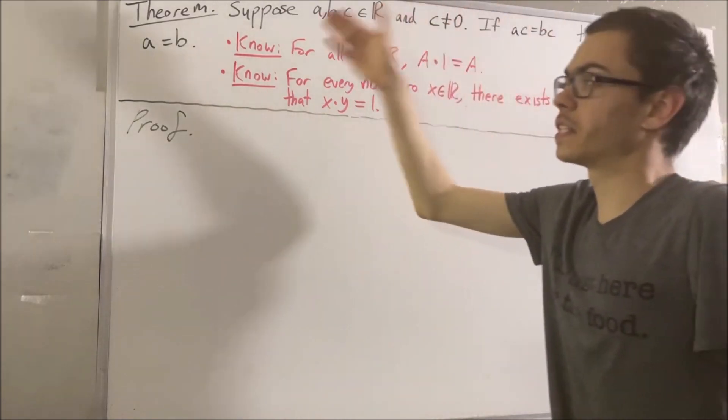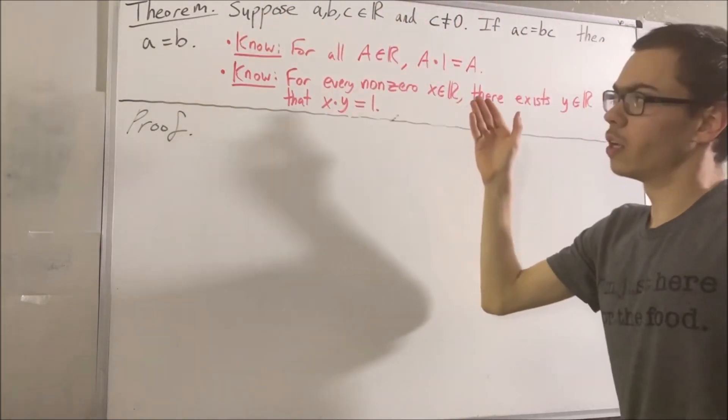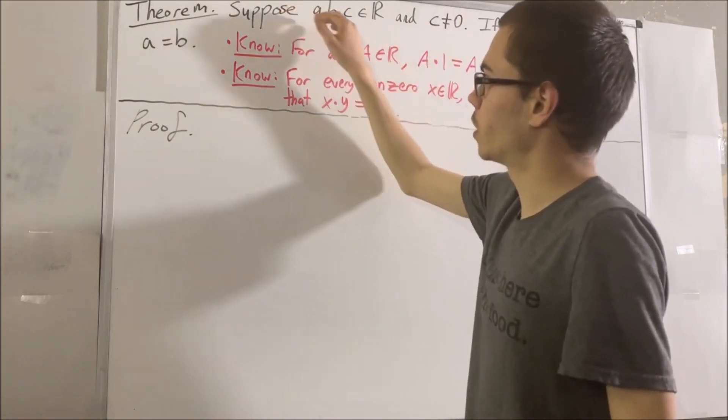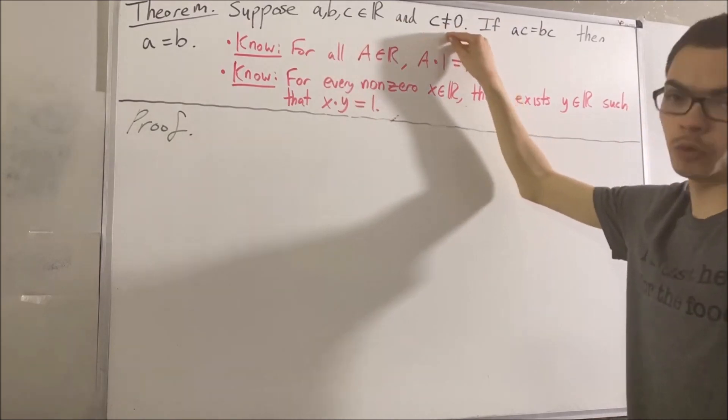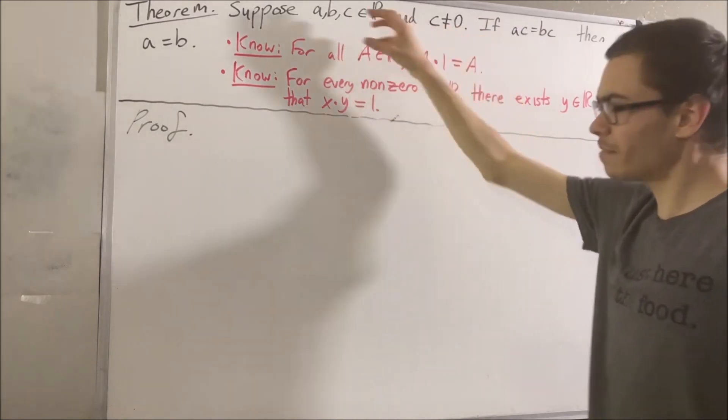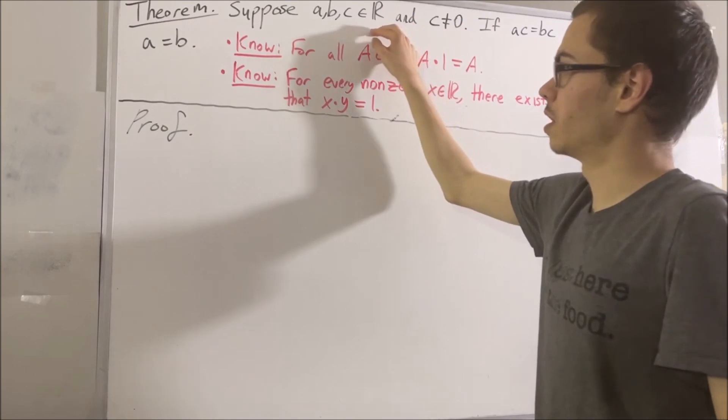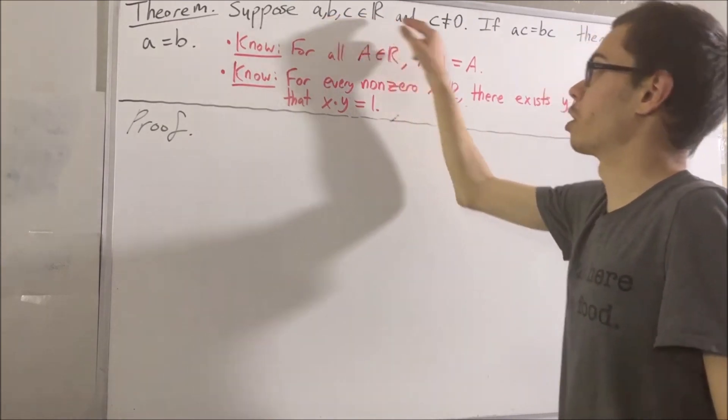Now let's get into proving the theorem. Notice, we're going to give ourselves three arbitrary real numbers where one of the numbers is not equal to 0. Give me any three real numbers. I'll call them A, B, and C, where C is not equal to 0.